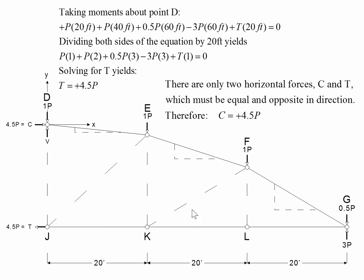Dividing both sides of the moment equation by 20 feet simplifies the factors. Solving for T, we get T = +4.5P. There are only two horizontal forces, C and T, and they must be equal and opposite in magnitude. Since T came out positive — meaning it is indeed in the direction we drew — C must be equal in magnitude but opposite in direction, so C = 4.5P in compression.